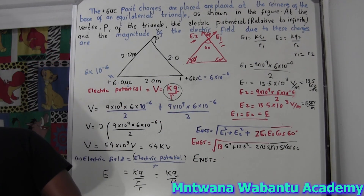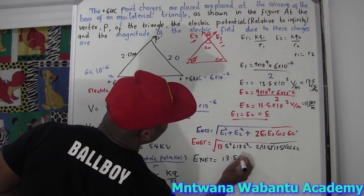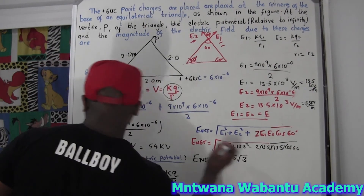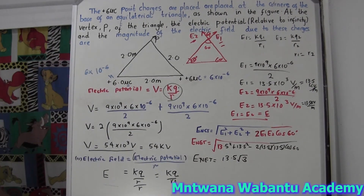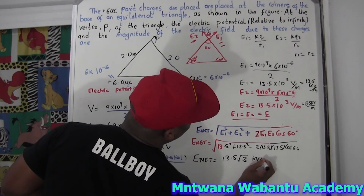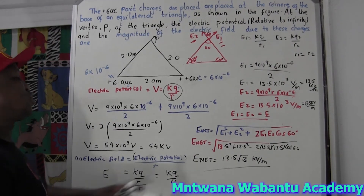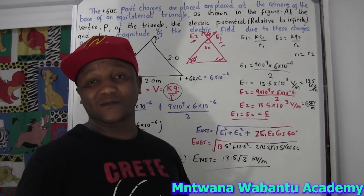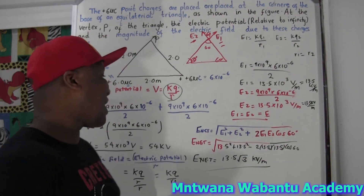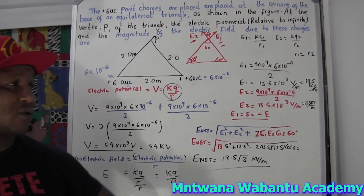When you plug into the calculator, it's going to give you 13.5√3, and the unit is kilovolt per meter — because I took everything as kilovolts. But if you want, you can leave the answer in volts per meter. So that's my answer.